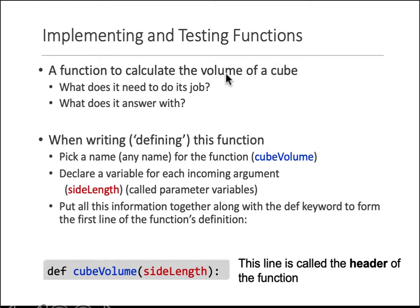Then you need to declare variables for each incoming argument. To calculate the volume of a cube, what do you need? A cube's volume is the multiplication of all three sides, but since all side lengths are the same, you only need one side length. That is the argument or parameter of the function.